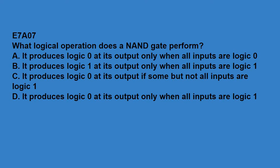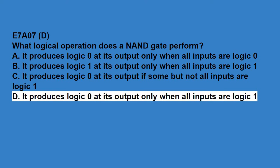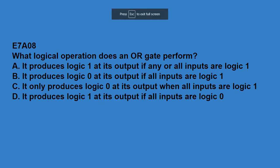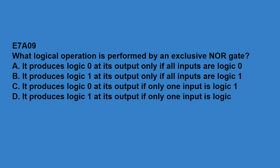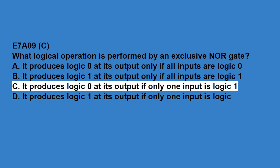E7A06, what is the characteristic of a monostable multivibrator? It switches momentarily to the opposite binary state and then returns to its original state after a set time. E7A07, what logical operation does a NAND gate perform? It produces logic zero at its output only when all inputs are logic one.